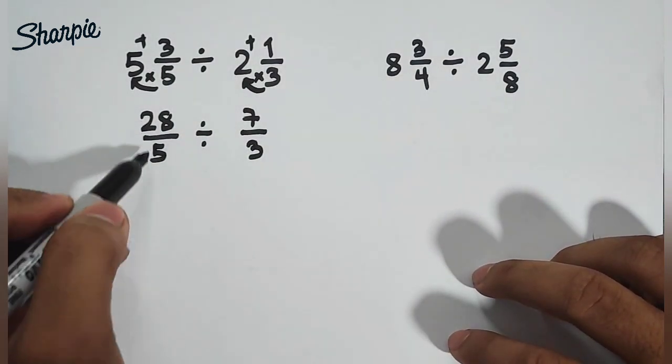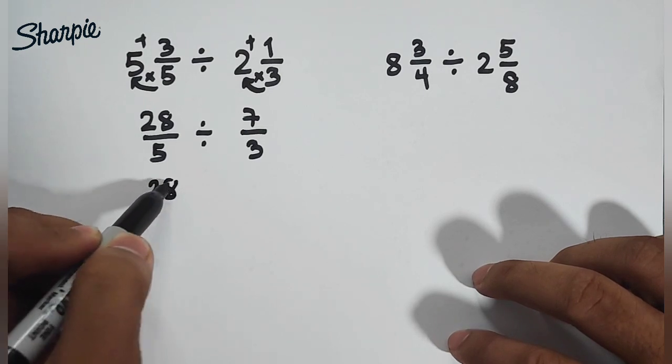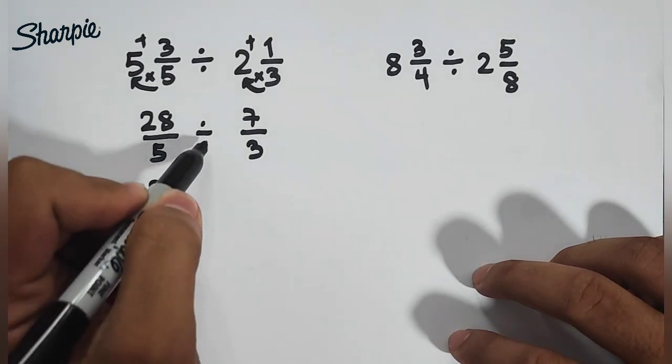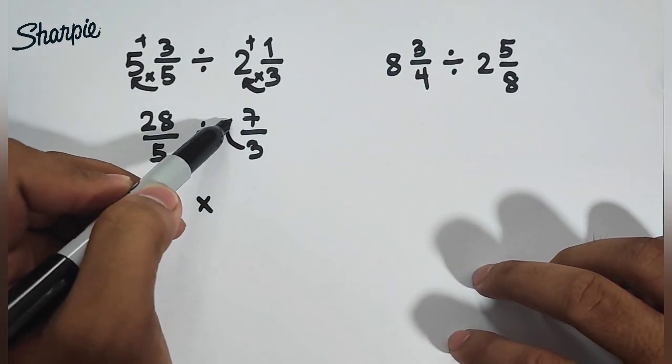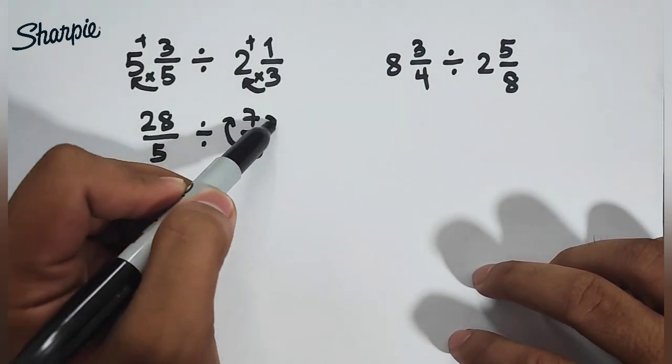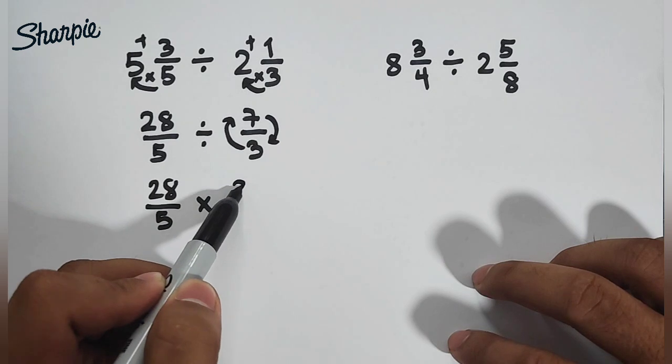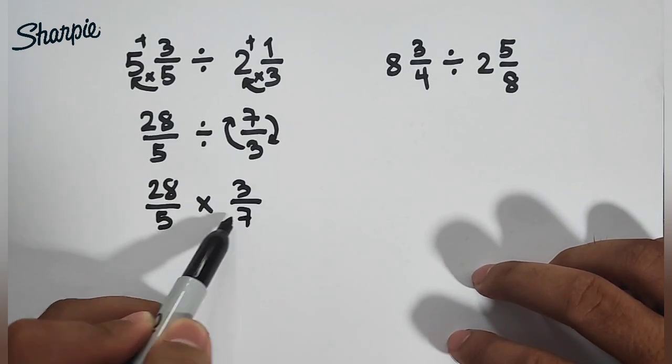So what's next is that we will copy this. We have 28 over 5. Then we will change this operation to multiplication and then get the reciprocal of 7 over 3 which is 3 over 7.